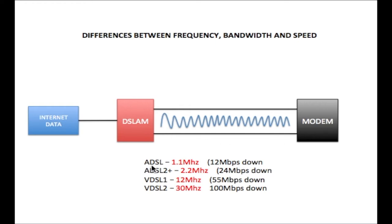Now looking first at an ADSL 1 type line at 1.1 megahertz. This 1.1 megahertz is generated by the DSLAM and sent out onto the line. When it gets to the line it generates the bandwidth. The bandwidth is the amplitude of the analog signal from the DSLAM to the modem. The amplitude of this signal would be 12 megabits per second. That is the bandwidth.